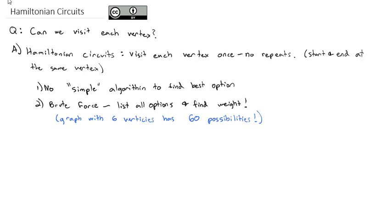And so we'd have to list all 60 of those possibilities, find the weight of all 60, and then decide which one's the best. And that is really a pain. So I'm not even going to do an example of brute force because it just takes way too much time. It's not efficient.